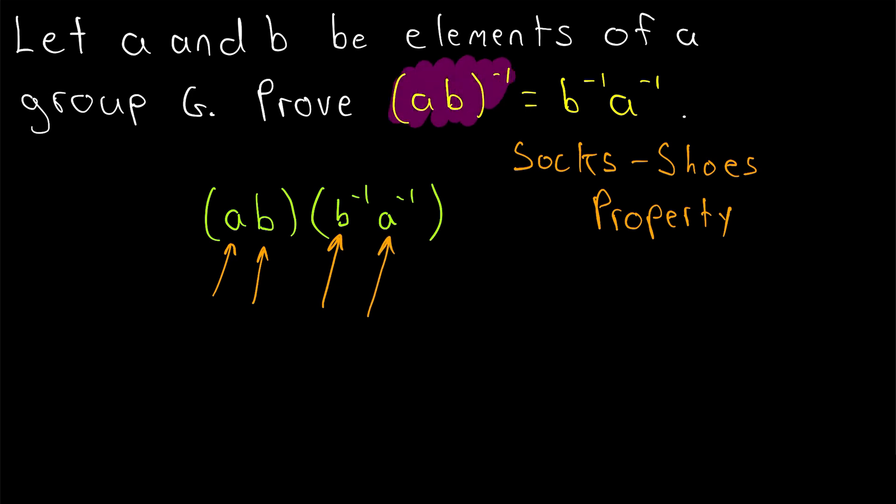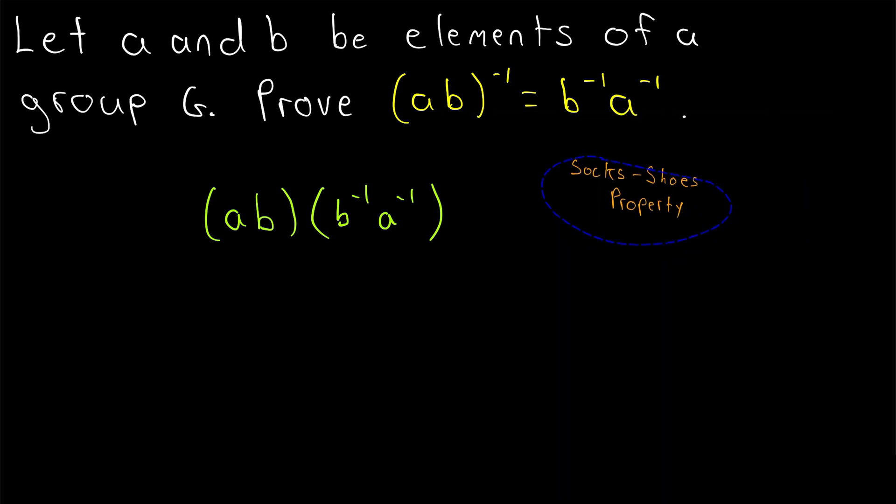So when we take the inverse of a product, we just have to invert the elements in the product and reverse their order. And that's why it's sometimes called the socks-shoes property. You put your socks on first and your shoes second, but to take them off, you got to go in the opposite order.